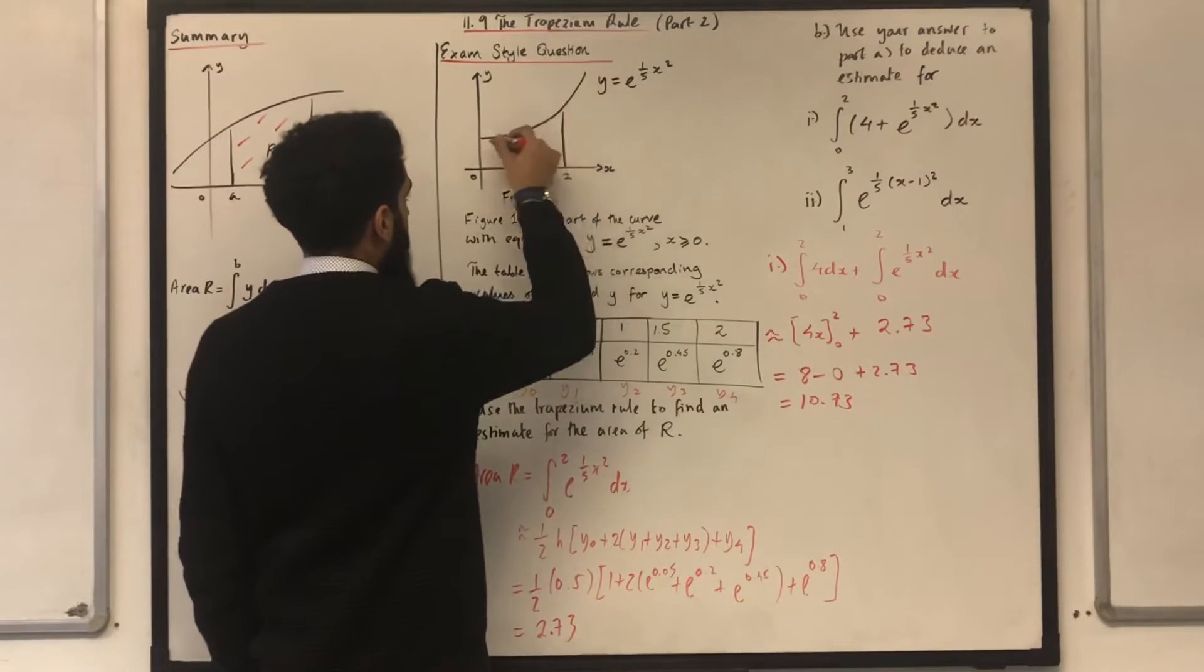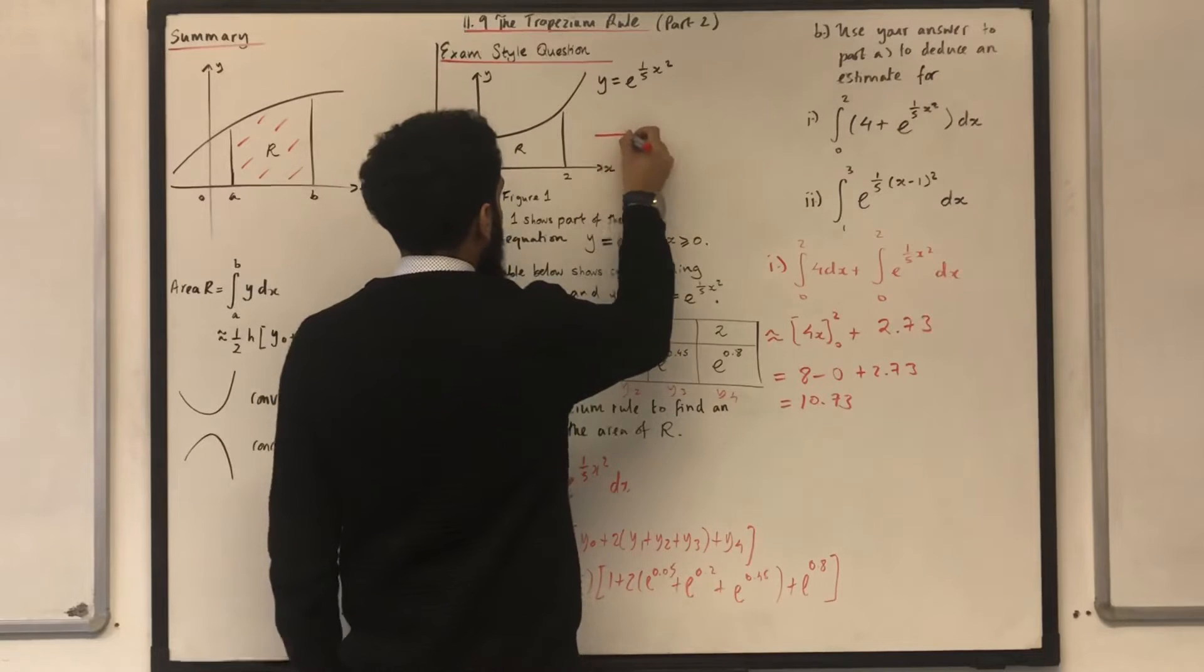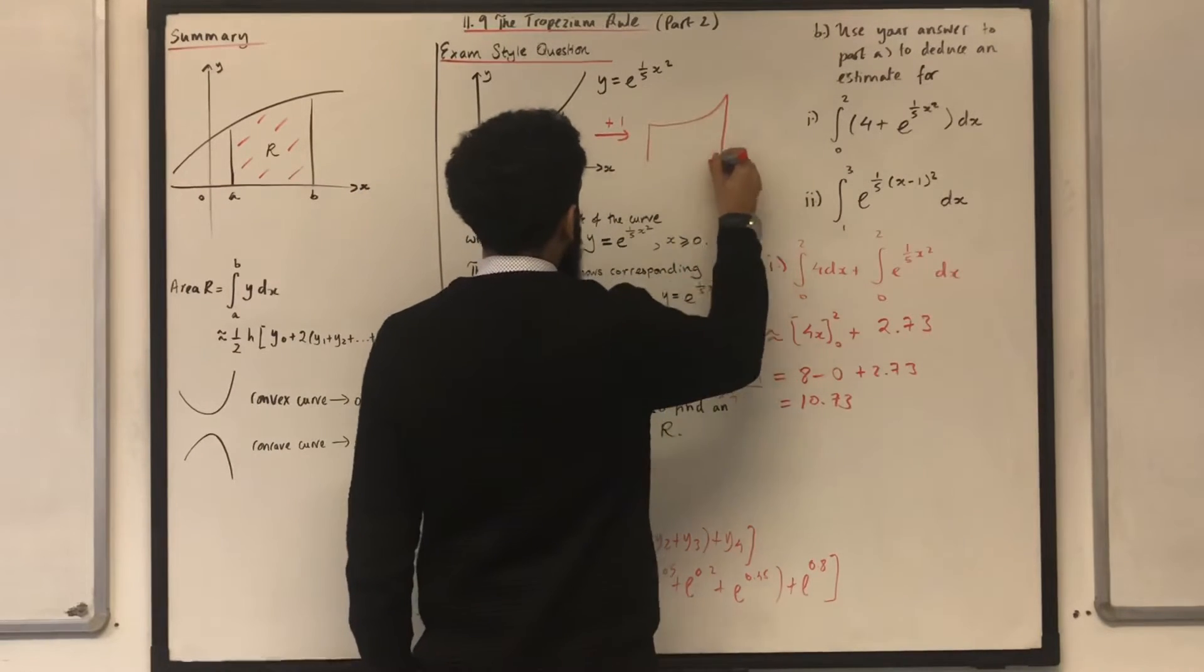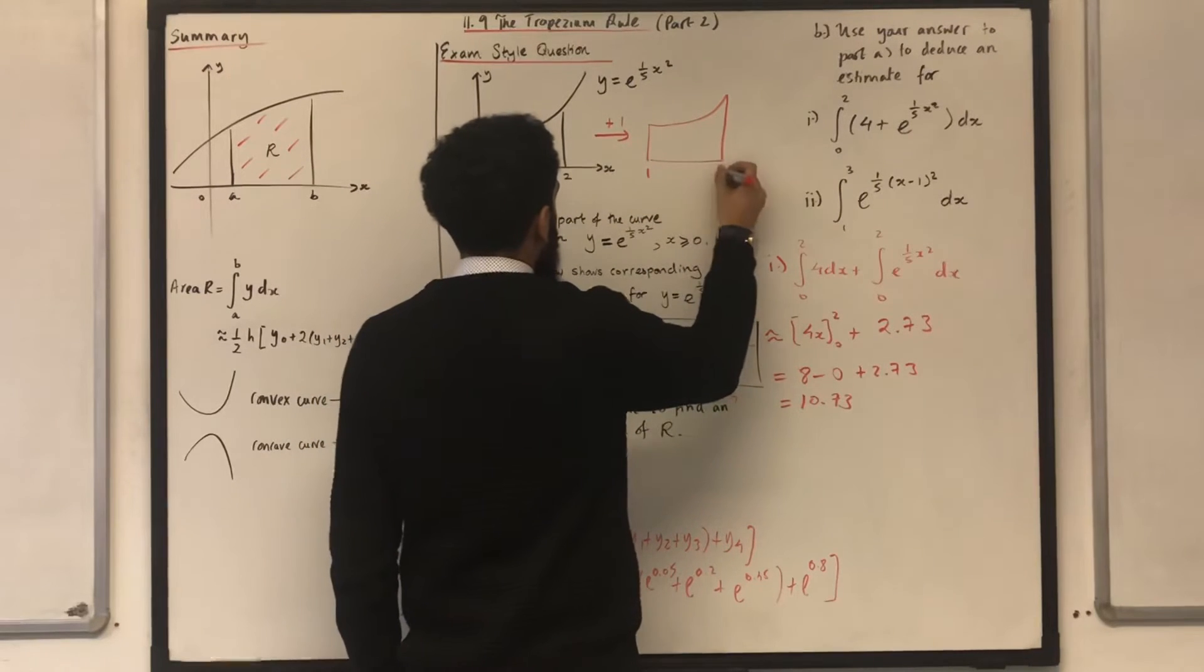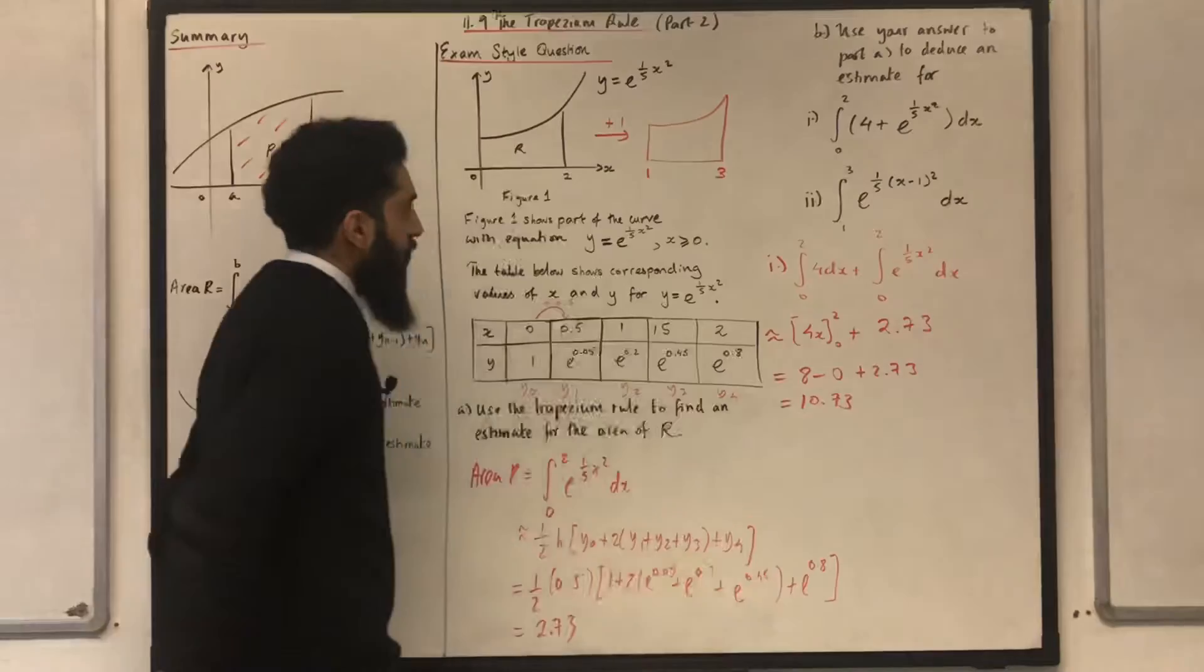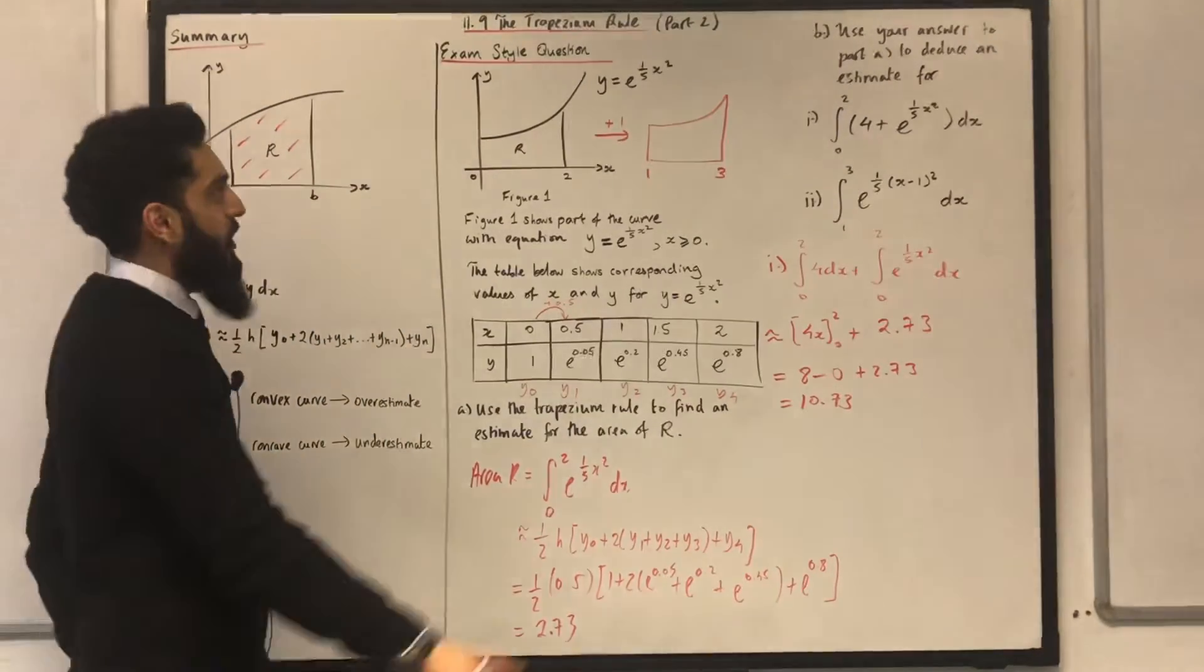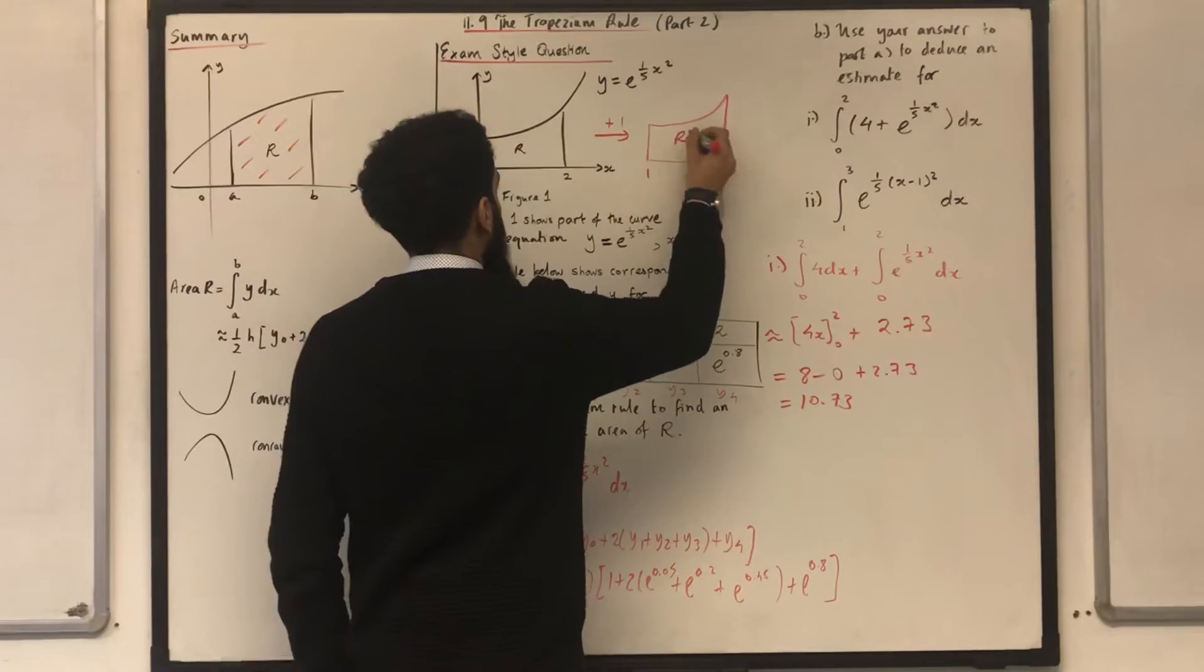First of all, I've got this area R. Limits are 0 to 2. I can translate it 1 unit to the right to give me this area over here. The limit there will be 1. The limit there will be 3. Now, does the area R change? It does not change because I've just shifted this whole area one unit to the right. So, I can call this area R.